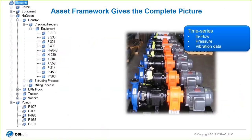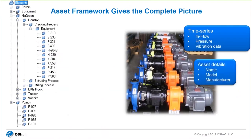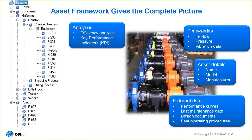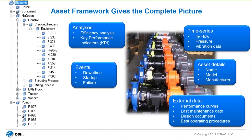Within AF, you can combine a lot of different things — time series data like a reactor's temperature or flow rate, metadata that isn't real-time but provides context around an asset such as model or manufacturer, and external data from databases, Excel, or design documents that you may want to link to that asset. The analytics platform within AF lets you calculate efficiency and performance indicators, and do if-then conditionals to format the data however you want it.